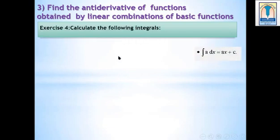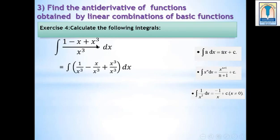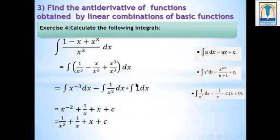Exercise 4: Calculate the integral of (1 minus x plus x cubed) over x cubed dx. We separate x cubed into each term: 1 over x cubed minus x over x cubed plus x cubed over x cubed dx. Simplifying: 1 over x cubed equals x to the power minus 3, x over x cubed equals 1 over x squared, and x cubed over x cubed equals 1. Applying the power rule and basic rules, the result is minus 1 over 2x squared plus 1 over x plus x plus c.